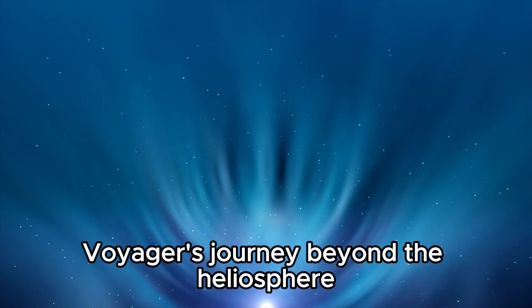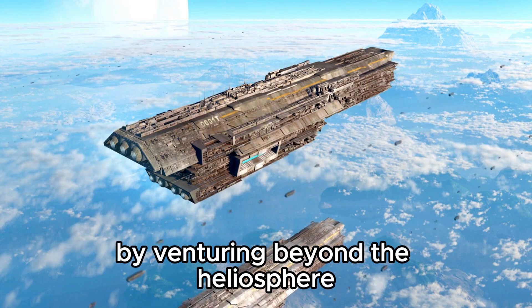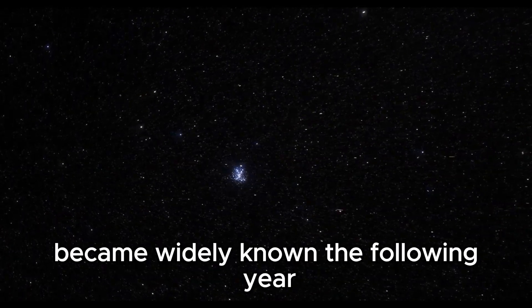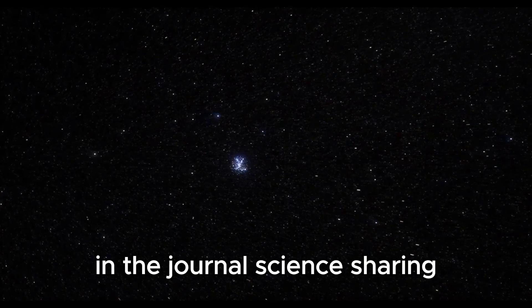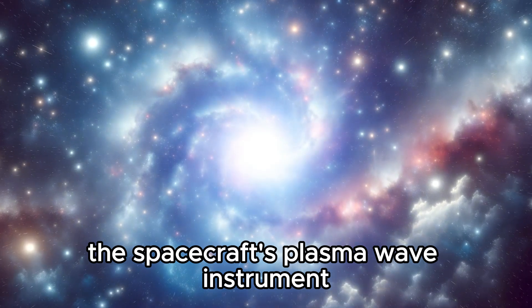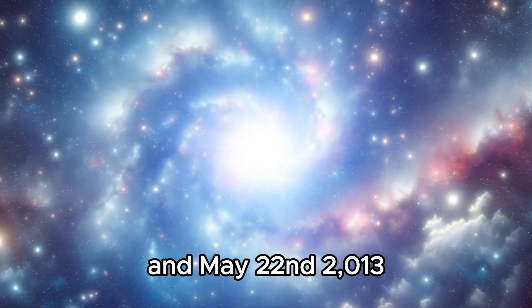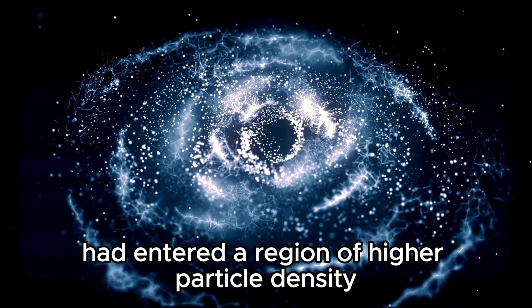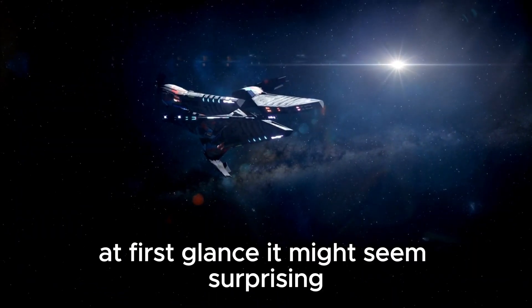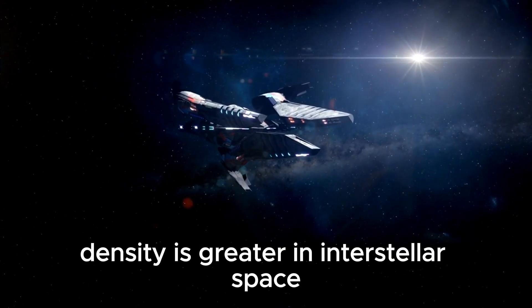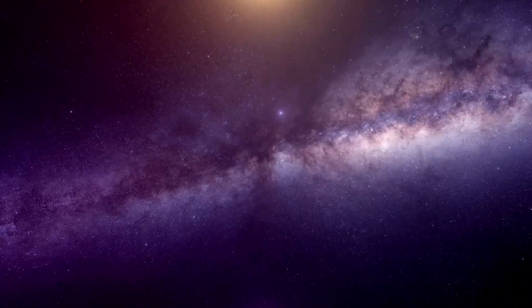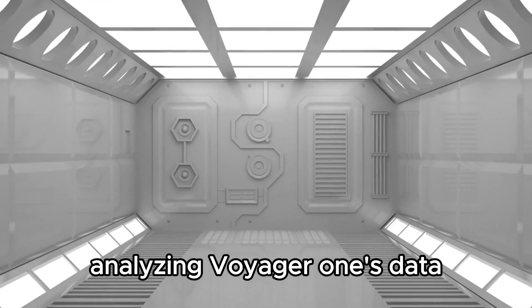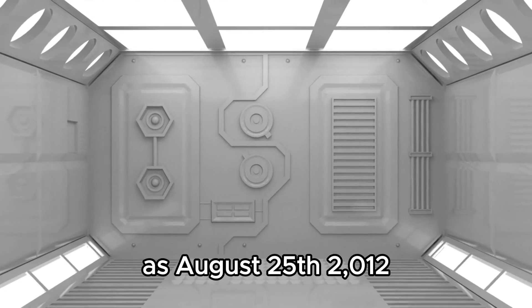Voyager's journey beyond the heliosphere in August 2012 marked an incredible milestone. By venturing beyond the heliosphere, a vast region of charged particles emitted by the sun, Voyager 1's remarkable feat became widely known the following year when a study was published in the journal Science. The spacecraft's plasma wave instrument detected a powerful solar eruption between April 9 and May 22, 2013. This event caused electrons near Voyager 1 to vibrate, indicating that the spacecraft had entered a region of higher particle density than that found just inside the heliosphere. Analyzing Voyager 1's data, researchers pinpointed the official departure date as August 25, 2012.